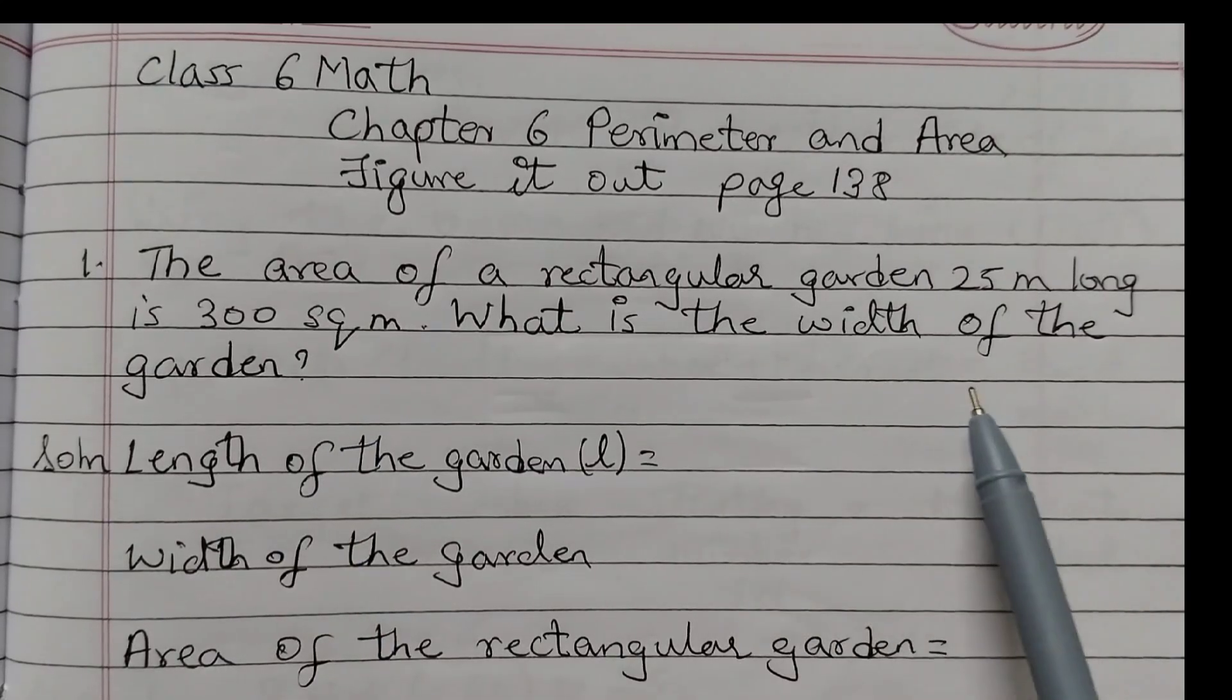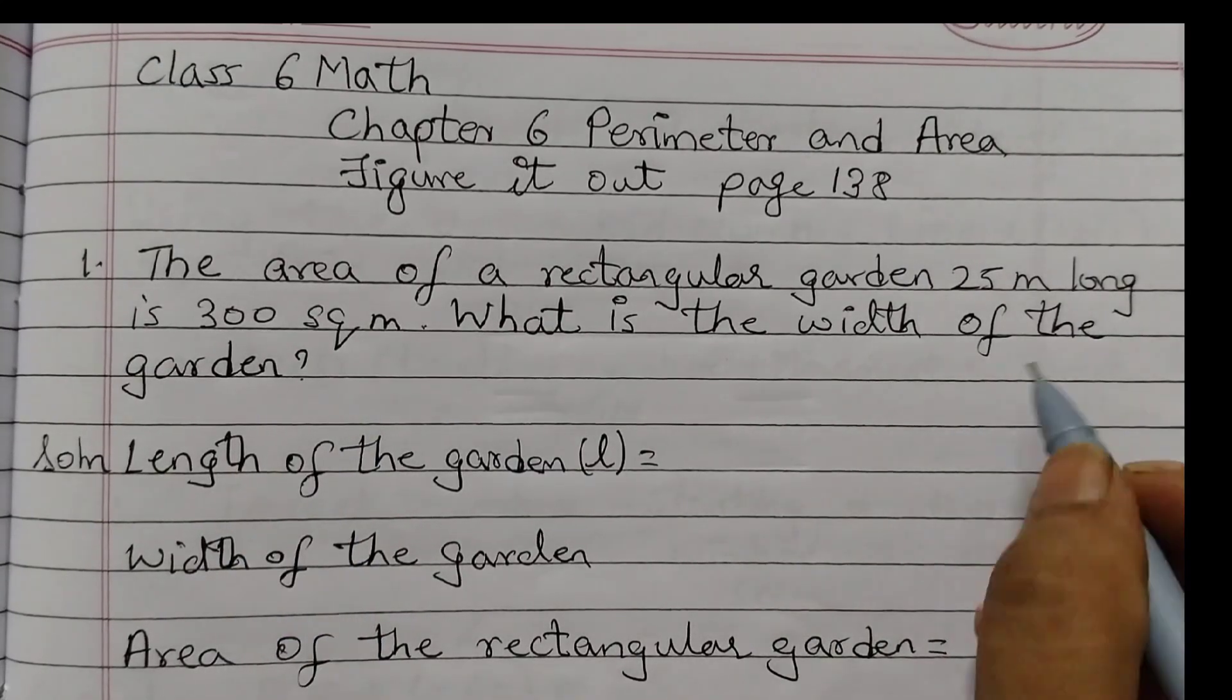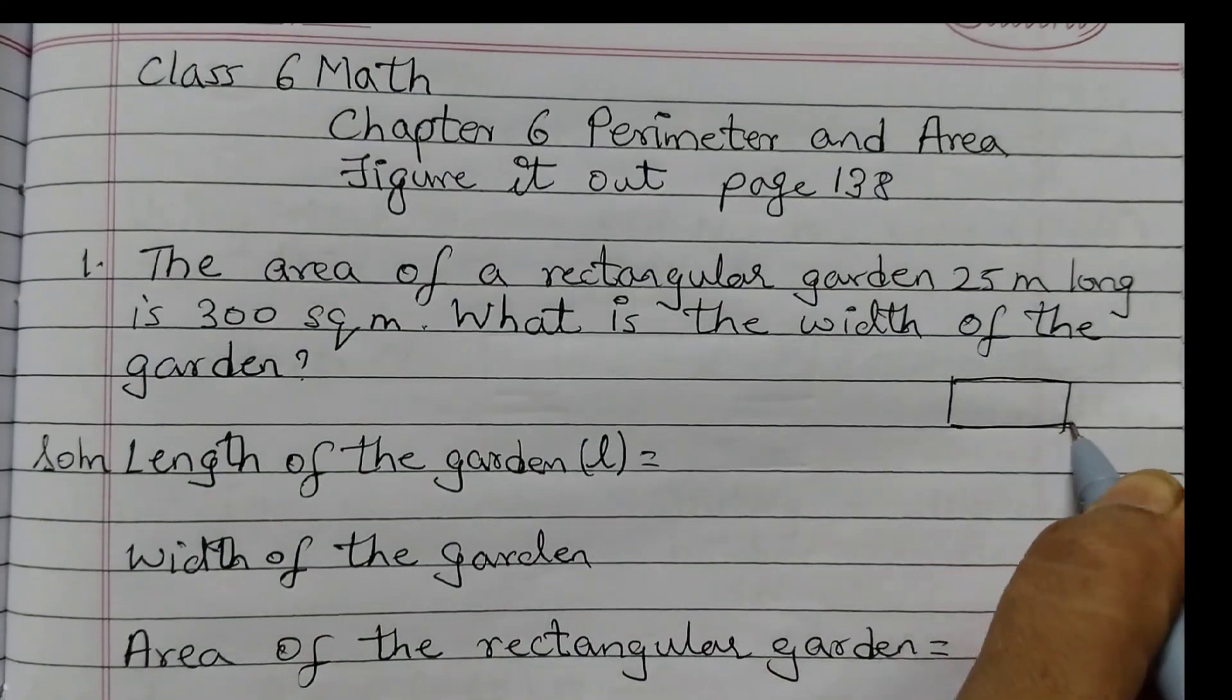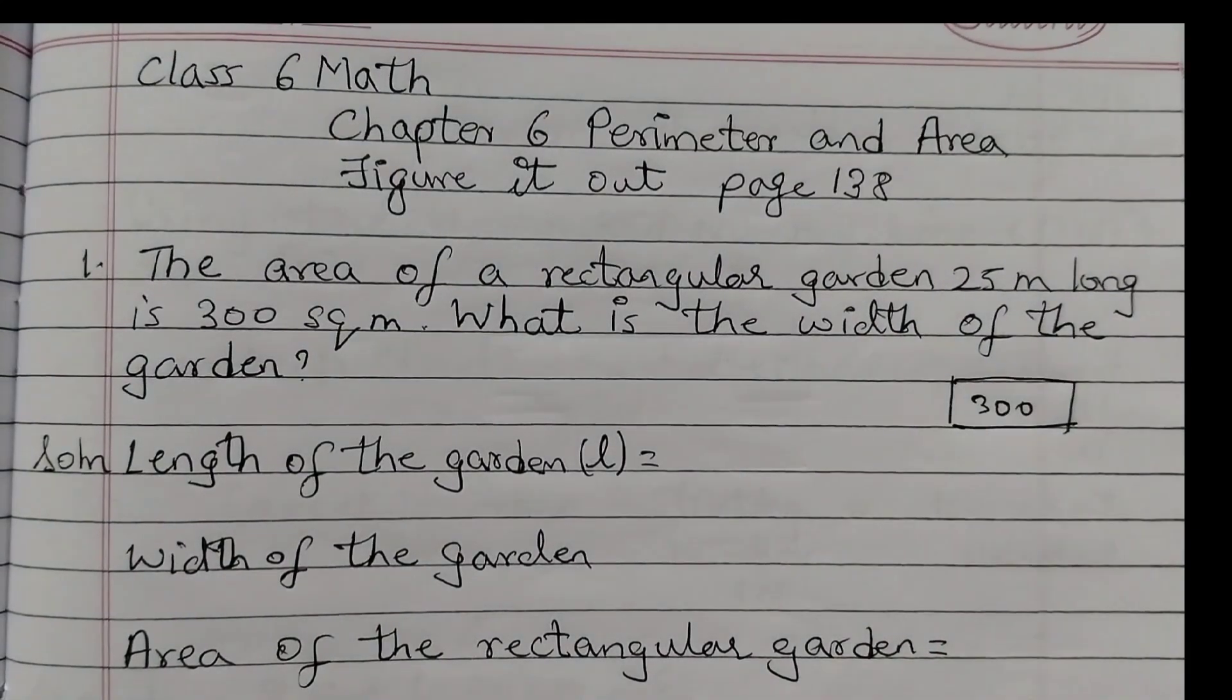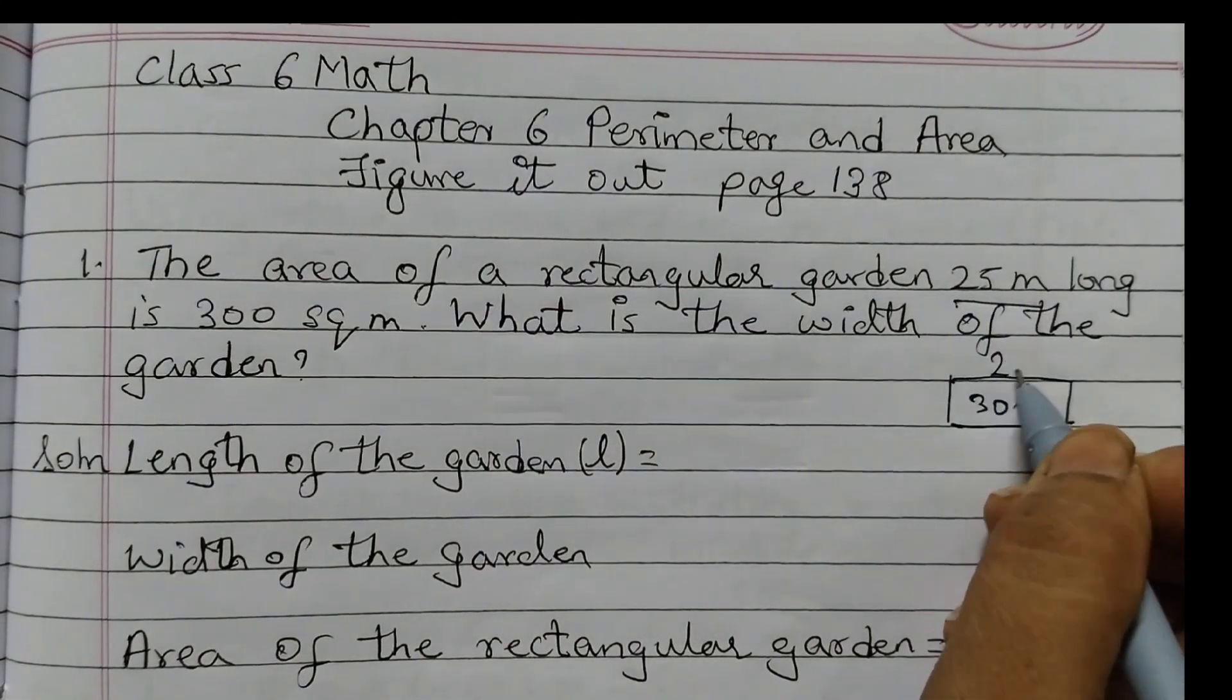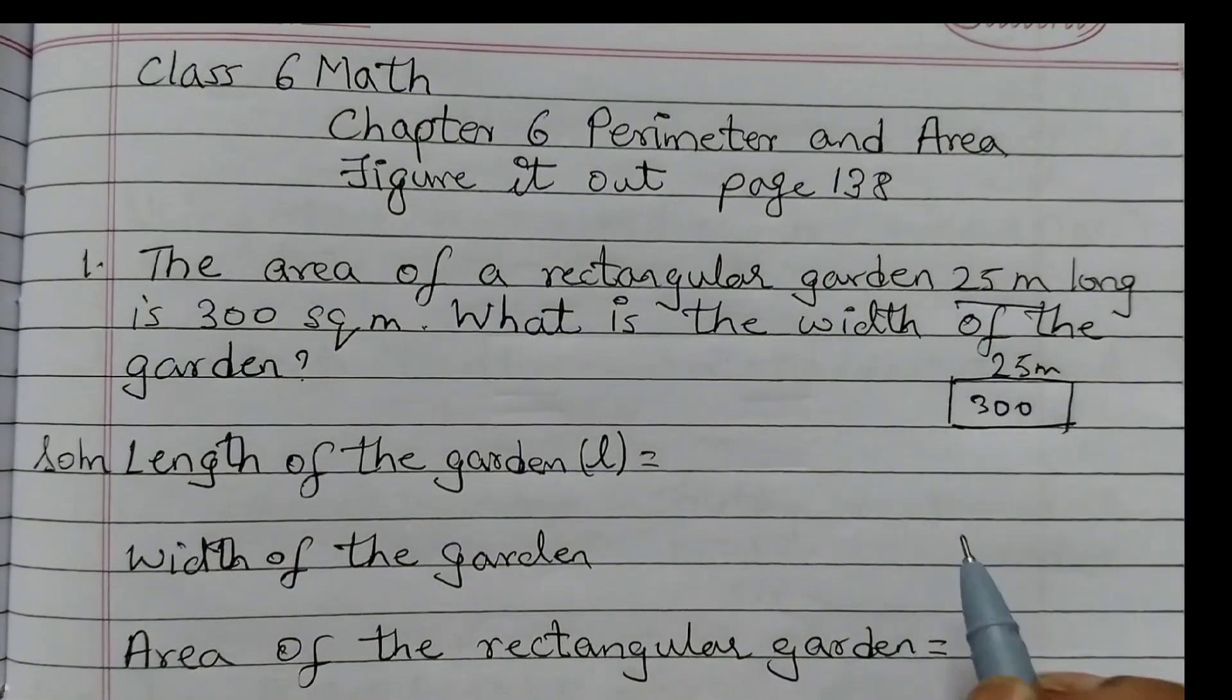What is the width of the garden? So we have a garden here and the area of this garden is given as 300 square meters, and the length is given as 25 meters. It's 25 meters long, okay?